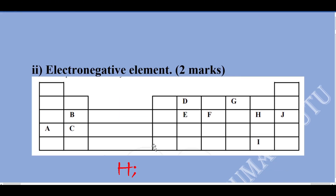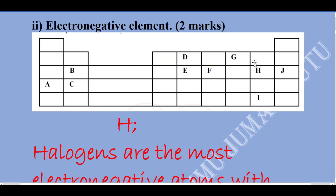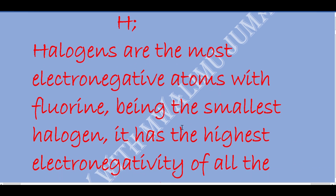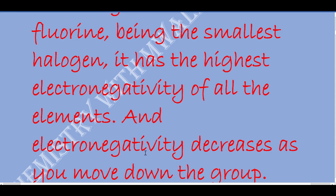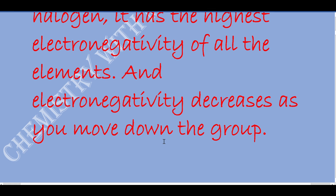Now for the electronegative element: group 1 are the most electropositive, and group 7 are the most electronegative. Since reactivity decreases down the group, H is the most electronegative element in this table. However, in the entire group, fluorine is the most electronegative element of all elements. Halogens are the most electronegative atoms, with fluorine being the smallest halogen and having the highest electronegativity. Electronegativity decreases as you move down the group, just as reactivity does.